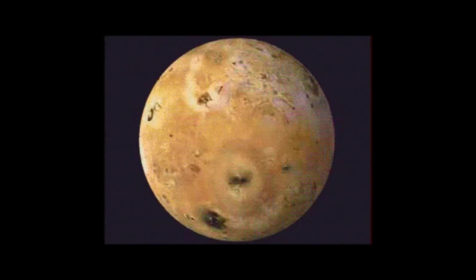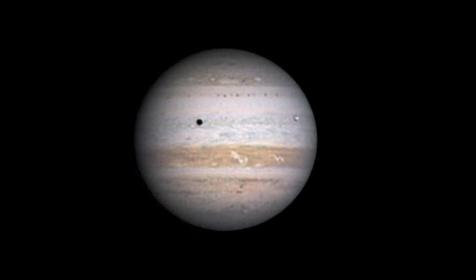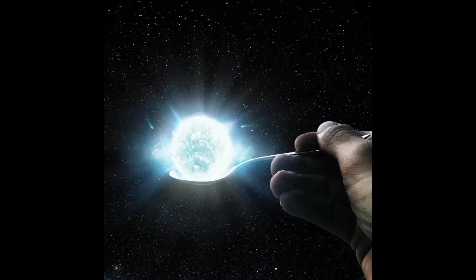Io is the most volcanically active world in our solar system. This is due to the constant pressure of Jupiter's gravity, along with gravitational pulls from Europa and Ganymede. Due to its tremendous density, a teaspoon of a neutron star would weigh 10 million tons.